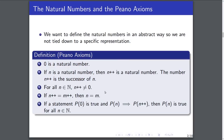The last axiom states that if a statement about the natural numbers is true for 0 — which we denote by P(0) — and the statement being true for n implies that it's true for its successor, which we denote by P(n) implying P(n++), then the statement P(n) is true for every natural number. This is just saying that induction works, and a lot of these proofs are going to be very induction-focused.